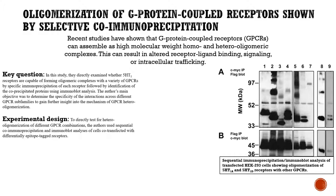To directly test for hetero-oligomerization of different GPCR combinations, the authors used sequential co-immunoprecipitation and immunoblot analysis of cells co-transfected with differentially epitope-tagged receptors. Remember, oligomerization is a process of converting a monomer or mixture of monomers to an oligomer — it may be a dimer, trimer, or tetramer.